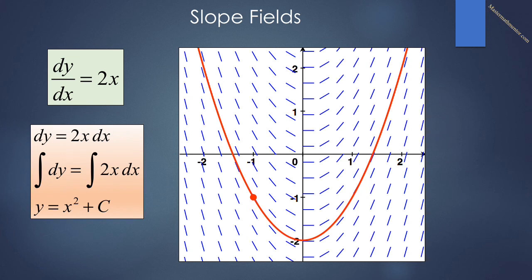For instance, suppose that the solution to the differential equation passes through the point (-1, -1). We can see that there will be a solution to the differential equation. To find it, we start at the point (-1, -1) and follow the slope field in both directions from the point, similar to a swimmer being pushed by a strong current. And note we get the parabola shown in red.